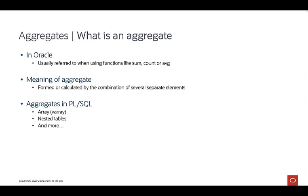In PL/SQL, we also have aggregates. We can create a single variable that contains multiple elements in, for example, a varray type. One single variable can contain multiple elements, just like a row in the database. And each element could have a record that contains one or more fields, just like columns in a database. You could therefore read the contents of an entire table into a single variable in PL/SQL. That's also called an aggregate.